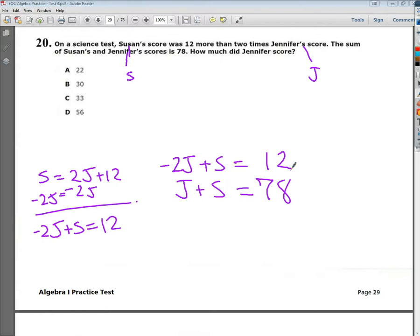What I'm going to do instead, or just what I'm going to choose to do anyway, is I'm going to do elimination. So I'm going to get rid of my S terms. In order to do that, one has to be plus and the other has to be minus.